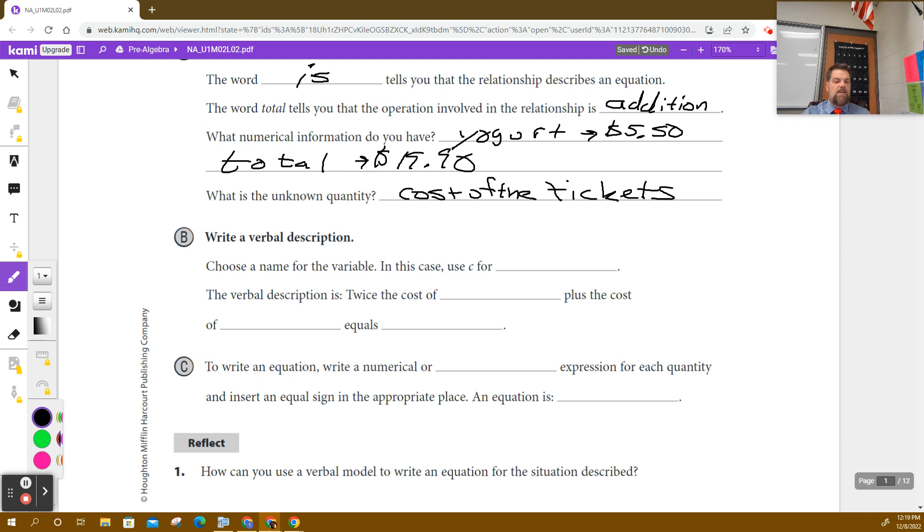So now what we want to do is choose the name for the variable. In this case, we're going to say C for the cost of tickets. In parentheses, put tickets. Then in the verbal description, twice the cost of what? A ticket. Why did they say twice the cost of a ticket? Two tickets, right? You need a ticket for Corey, and you need a ticket for Walter. So that's two tickets total. Each one of those needs a ticket.